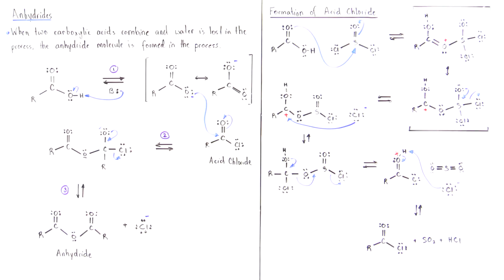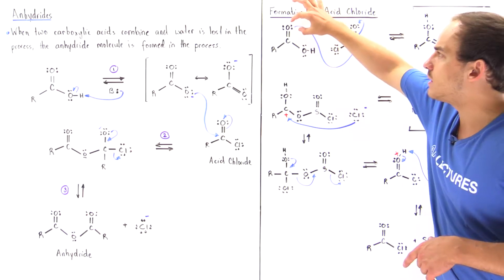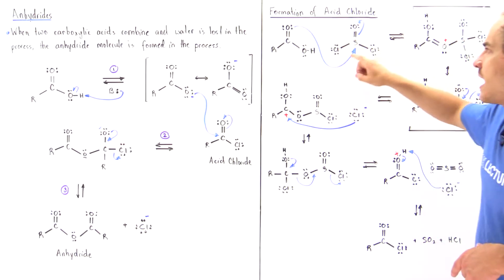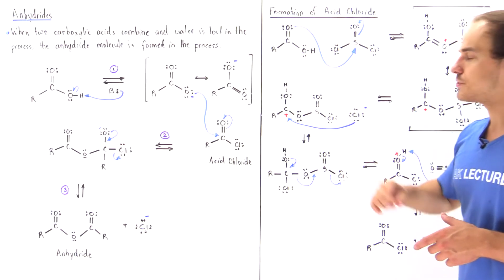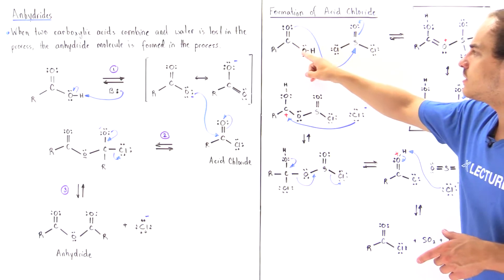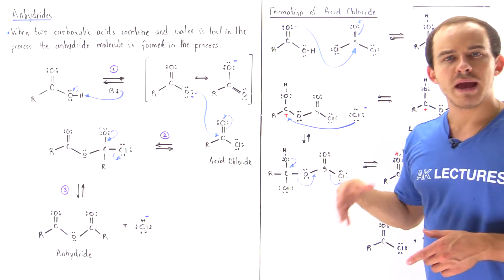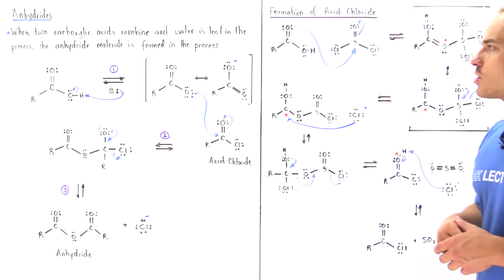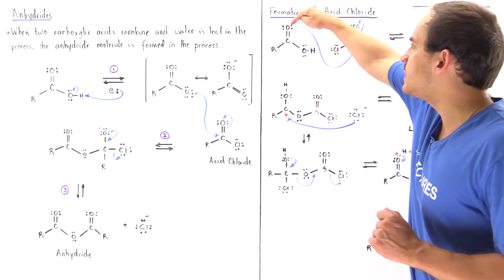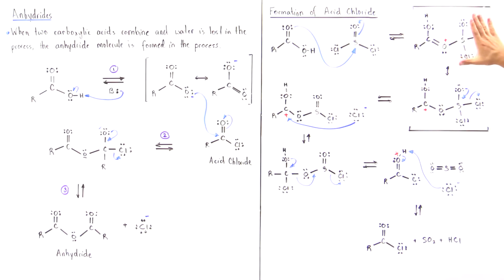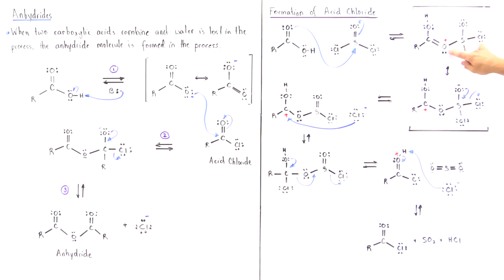You may be wondering why these electrons on this oxygen attack this sulfur but not these other electrons. If the electrons of the second oxygen attacked this sulfur, we would not form a resonance-stabilized structure. Only the nucleophilic attack of this oxygen forms two resonance-stabilized structures, giving delocalization of positive charge between this electronegative oxygen and this electropositive carbon.